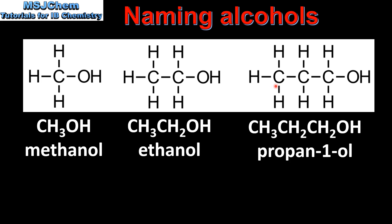When we get to an alcohol that has three or more carbons, there are different positions in which the OH group can be. In this molecule the OH group is attached to carbon number 1, therefore it's propan-1-ol.